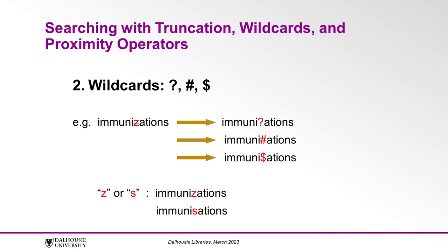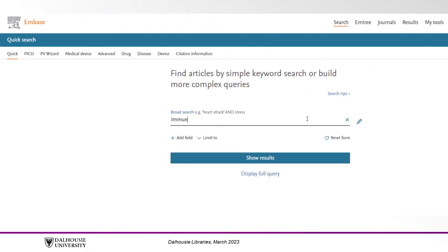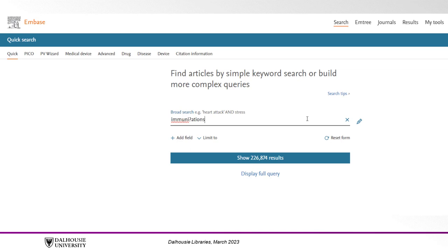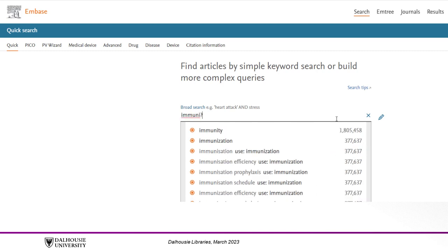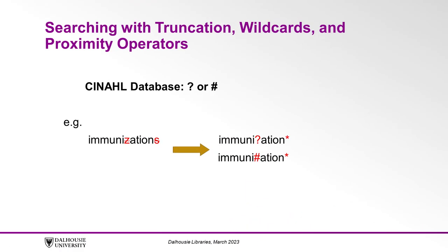Using our example keyword 'immunizations', we could search using a wildcard in place of the Z, because sometimes the word is found with an S in the middle instead of a Z. The wildcard symbol will search for those variations and include results with either spelling. Embase will let you do a wildcard search within your keyword using the question mark or dollar sign. Here we have one example in the Embase search bar typed as 'IMMUNI?ATIONS', with a question mark in place of the Z. You could also go further and use the asterisk on the end, typed as 'IMMUNI?ATION*', giving you a larger number of results.